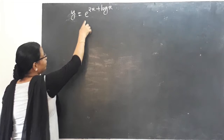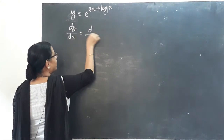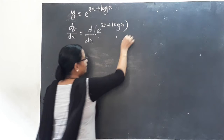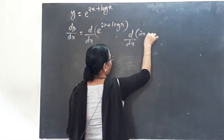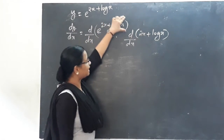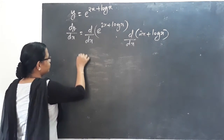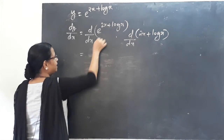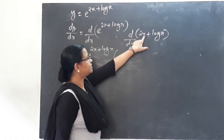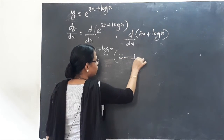Next example: y equals e raised to (2x plus log x). Using the chain rule, dy/dx equals e raised to (2x plus log x), times the derivative of (2x plus log x). E raised to x differentiates to itself. Then by sum rule, the derivative of 2x is 2 and the derivative of log x is 1 by x. So the answer is e raised to (2x plus log x) times (2 plus 1/x).